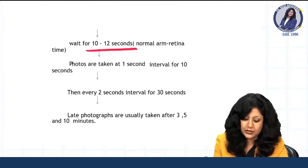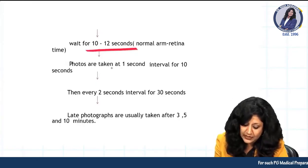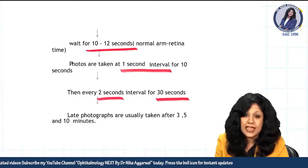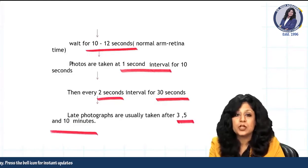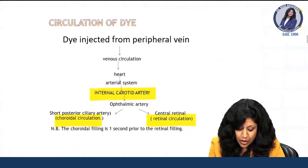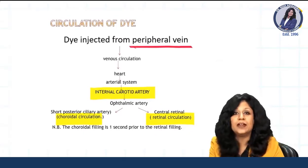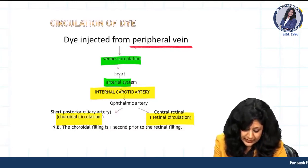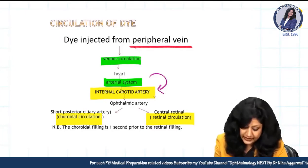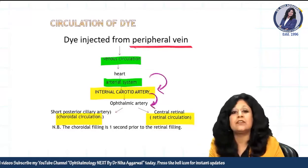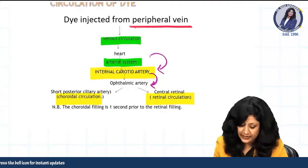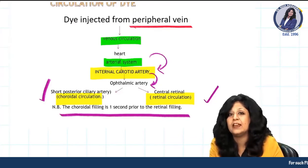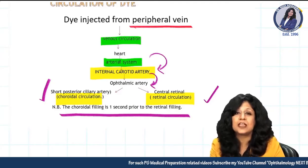After injection, wait 10 to 12 seconds, then take photos at an interval of 1 second for 10 seconds, then every 2 seconds for 30 seconds, then at 3 minutes, 5 minutes, and 10 minutes. Photographs are taken in phases because the dye travels from the antecubital vein into venous circulation, then to the internal carotid artery, then into the ophthalmic artery, branching into both retinal and choroidal circulation. Choroidal filling is 1 second prior to retinal filling.